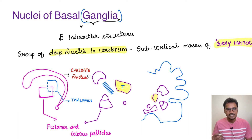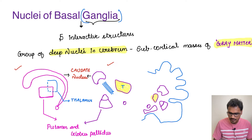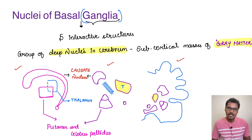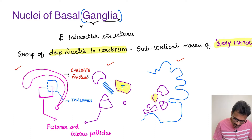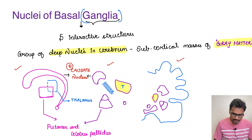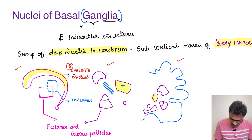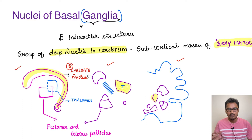Coming to the five interactive structures, we will understand them one by one. There is a lateral view, a horizontal view, and a frontal view of the same structures. All five structures are closely located near the thalamus, so these nuclei can influence the thalamus, which in turn can influence the cortex and alter movements. The most important nucleus is the caudate nucleus — it is a bigger nucleus with a head portion and a tail portion. At the end of the caudate nucleus there is a rounded structure called the amygdaloid body, which we will not discuss here.